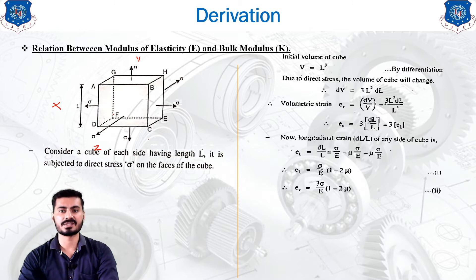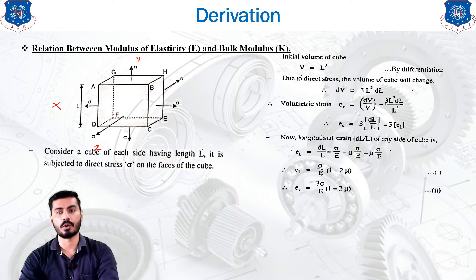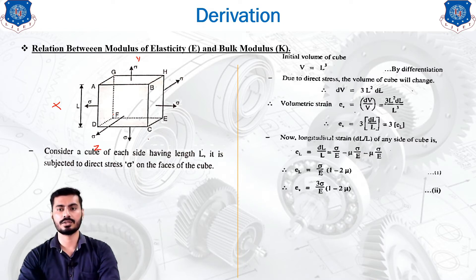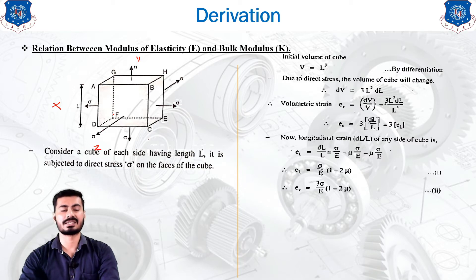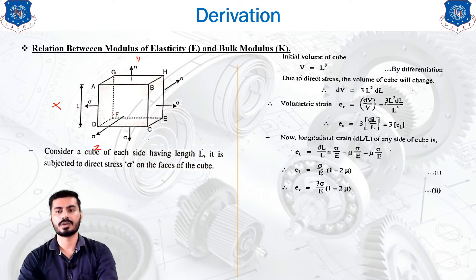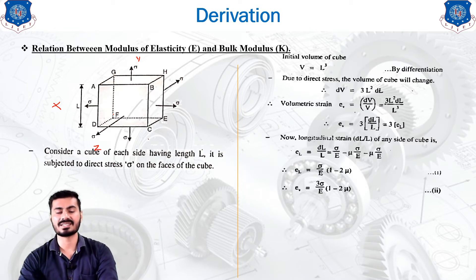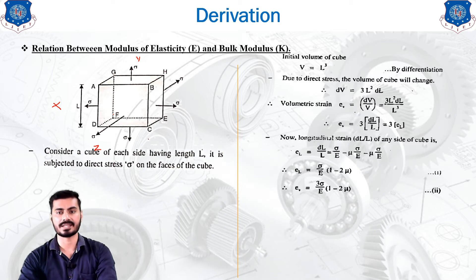Using the differentiation method from the previous derivation, we find the change in volume due to the direct stress. Differentiating V = L³ gives delta V equals 3L² dL. The volumetric strain is delta V over V, which substituting those values gives 3L² dL divided by L cubed. This simplifies to epsilon_V equals 3 times dL over L.